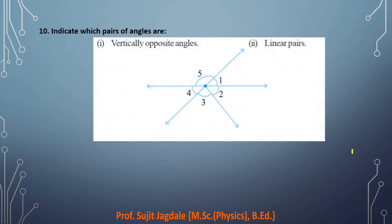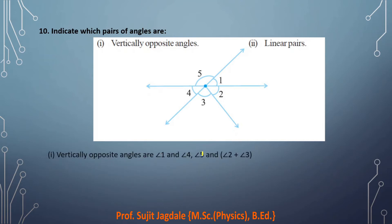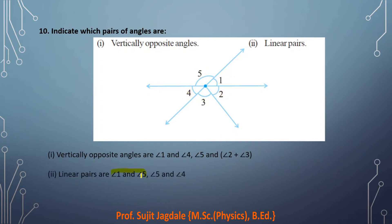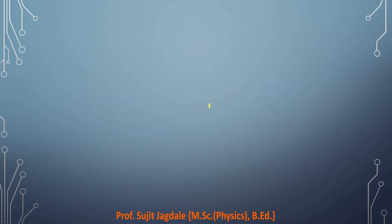Question 10: Indicate which pairs of angles are vertically opposite and which are linear pairs. Vertically opposite angles: angle one and angle four, and angle five with angle two plus three. Linear pairs: angle one and angle five, and angle five and angle four. Only these two linear pairs exist because other combinations do not sum to 180 degrees.